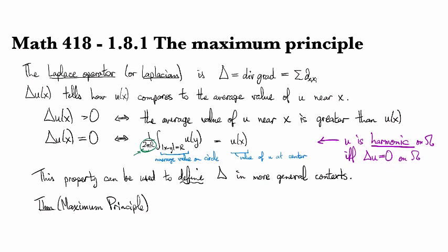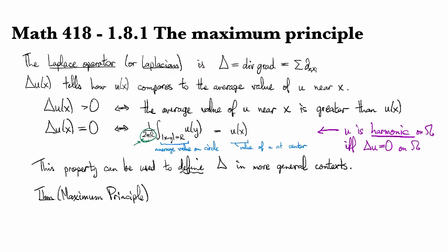The maximum principle says that harmonic functions can only have a maximum value on the boundary. More precisely, suppose we've got some region which is open and connected—so it's one piece—and suppose that the closure of this region, so that means this region and we also throw in the boundary of this region, suppose this is compact.